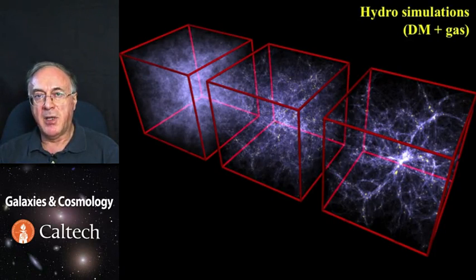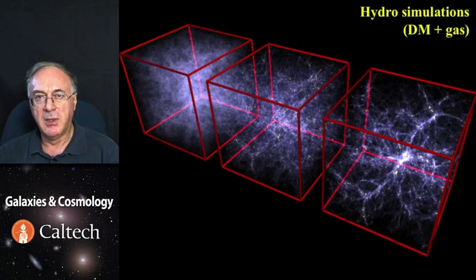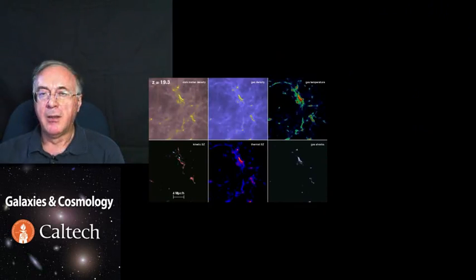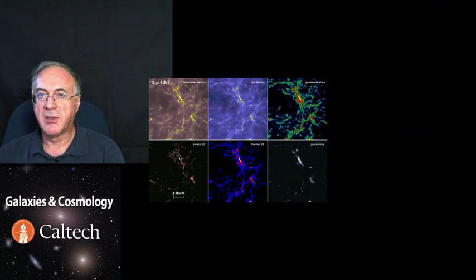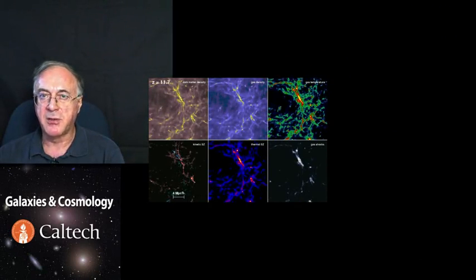So next movie, we'll take a look at a formation of a cluster of galaxies using full hydrocode, again by the Max Planck group, and showing how different physical properties change in time. Now here we start at the redshift of 20, when just first seeds of large scale structure form.